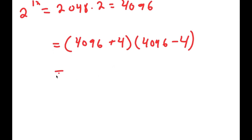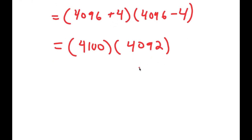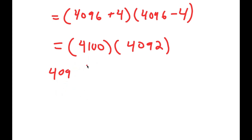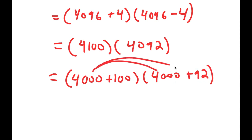4096 plus 4 equals 4100, and 4096 minus 4 equals 4092, so I get 4100 times 4092. Now we need to find a way to solve this without a calculator. Just doing it normally would take too long, so we need a more efficient method. What we can do is write 4100 as 4000 plus 100, and write 4092 as 4000 plus 92. The reason I did this is so I can distribute.